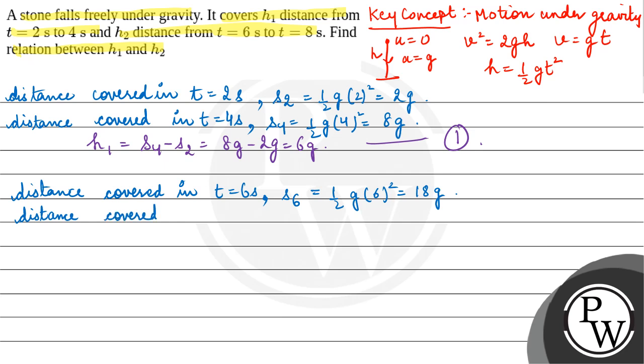For t equals 8 seconds, s8 equals half g times 8 squared, which is equal to 32g. So h2 equals s8 minus s6, which is 32g minus 18g, that is equal to 14g.